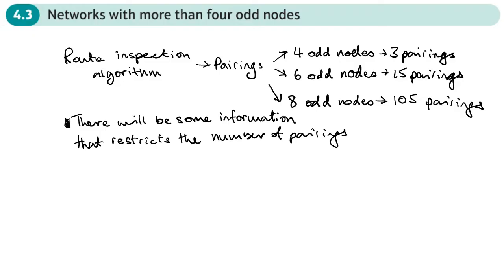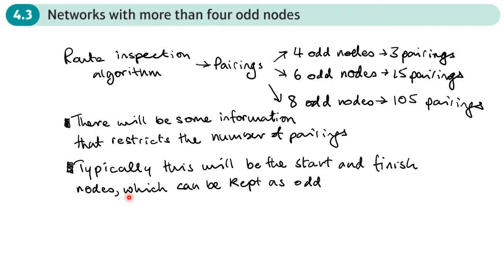Typically that will be where the thing or person starts and finishes - they won't be in the same place. So where they start and finish will be in different places, which means we can keep those nodes as odd. And since these vertices can be kept as odd, it means they get rejected from our pairing. So with six odd nodes, if two of those odd nodes are where we're going to start and finish, then we only need to look at the pairing of the four. So we're looking out for this piece of information that restricts the number of pairings, and that will be where we start and finish - those nodes can be kept as odd.